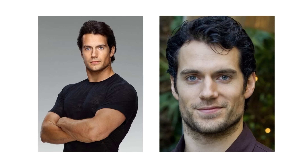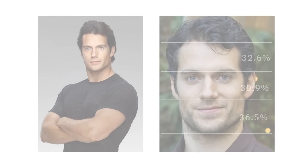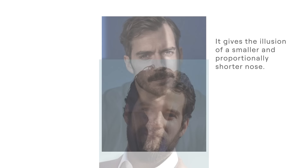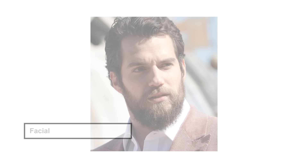The first thing that catches the eye is Henry's general facial shape and proportions. He has that stereotypically squared off, wide and masculinised face. His facial thirds are distributed so that his middle third, where the nose occupies, is the smallest proportion of the face. This is usually attractive because it gives the illusion of a smaller and proportionally shorter nose. Growing out his beard vertically lengthens the lower proportion and further masculinises that distribution, and facial hair is masculinising in and of itself.